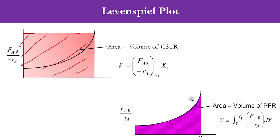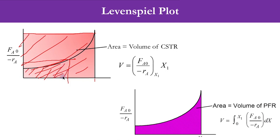To summarize: first draw the Levenspiel plot from the given data — either FA0 over minus rA as a function of X, or 1 over minus rA as a function of X. To calculate the volume of the CSTR, draw a horizontal line at the curve value for your desired conversion, then draw a vertical line down to the X-axis; that rectangular area is the CSTR volume. The area under the curve at the same point represents the PFR volume.